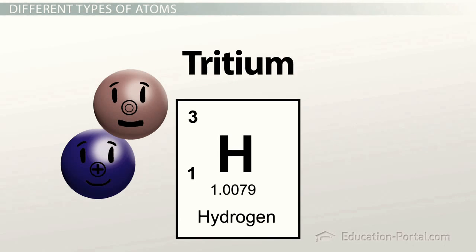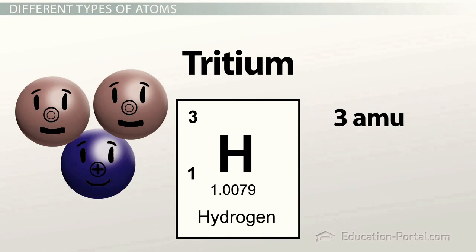The last isotope is called tritium, and it has, as you may guess, still only 1 proton, but it contains 2 neutrons in the nucleus, giving it a mass of 3 AMU, 3 atomic mass units. There is very little tritium that exists, and it's very unstable.